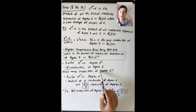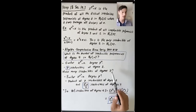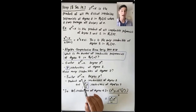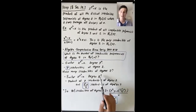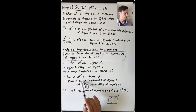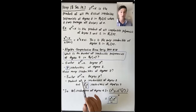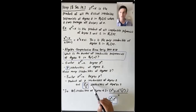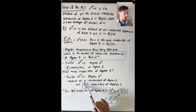How many irreducibles in F_p[x] have degree 2? Look at x to the p squared minus x instead. This has degree p squared and is a product of all irreducible factors of degree 1 and degree 2. There are p irreducibles of degree 1, giving a factor of degree p. So the product of all degree-2 irreducibles has degree p squared minus p, meaning there are (p squared minus p) divided by 2 irreducibles of degree 2.